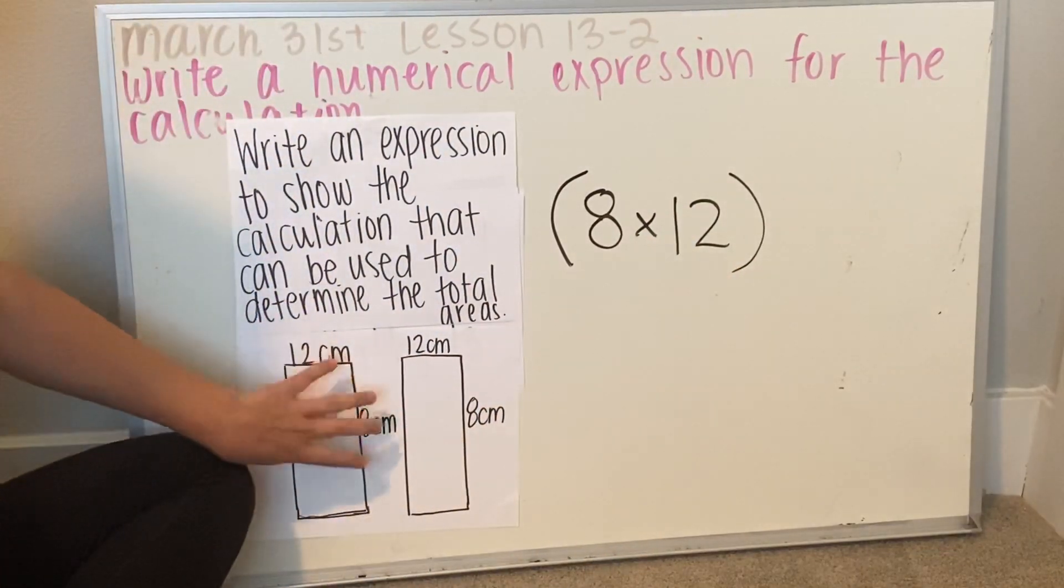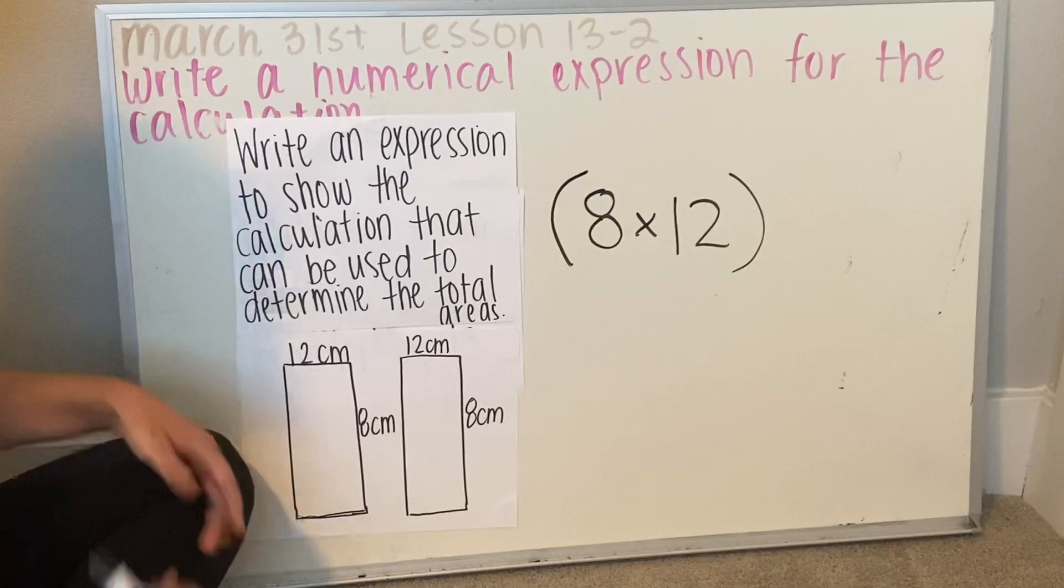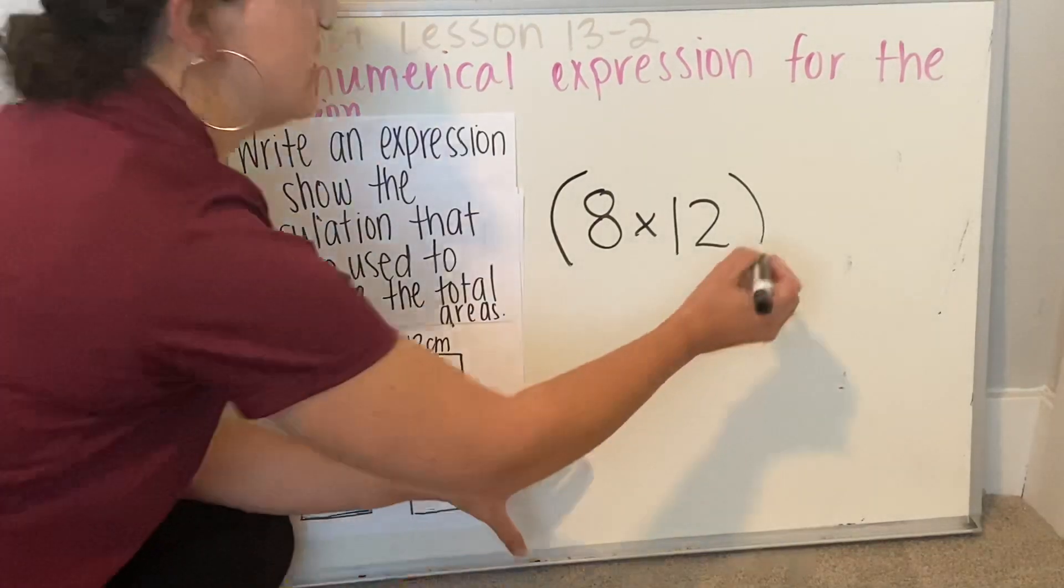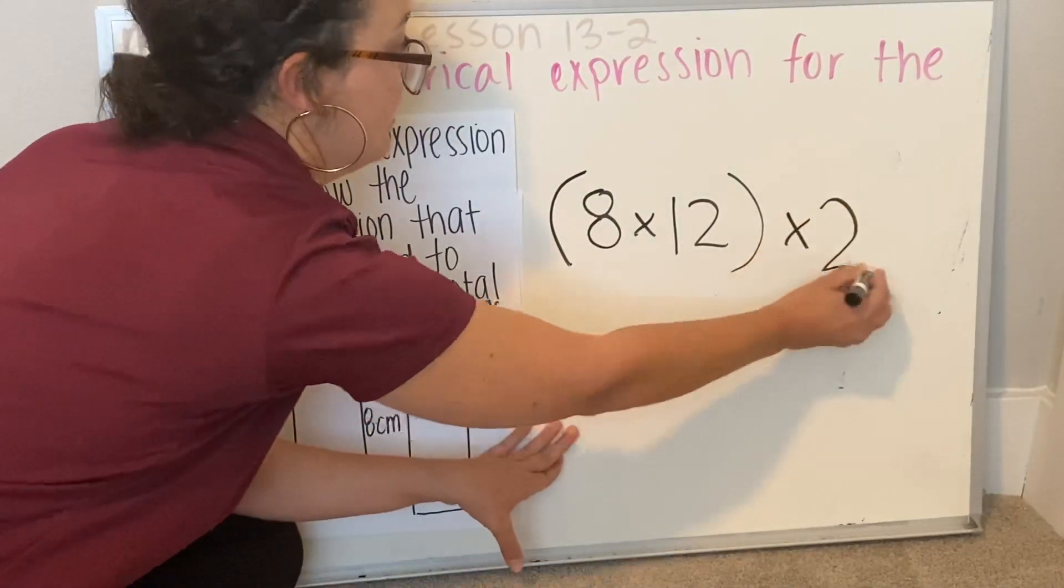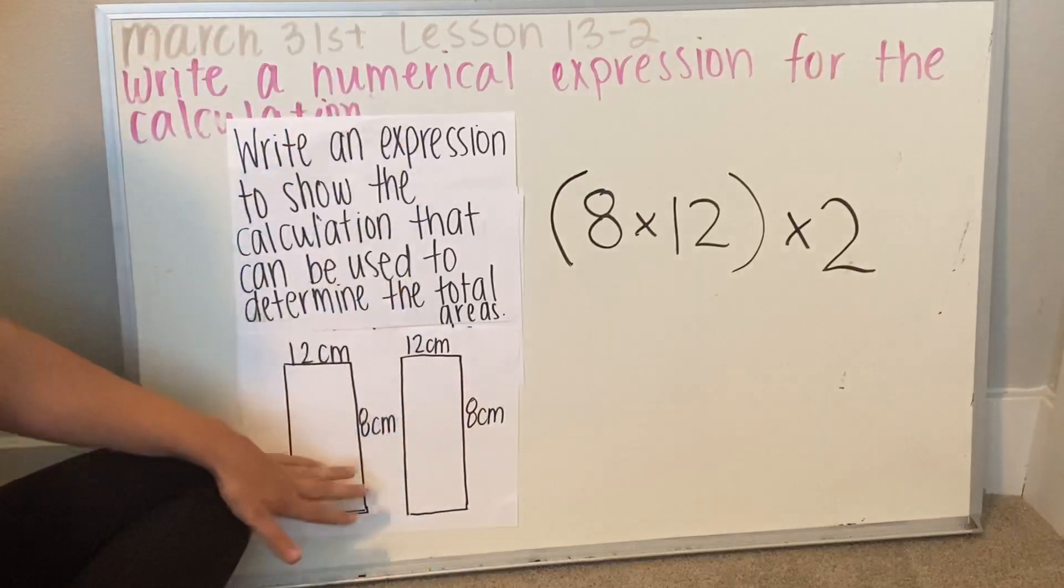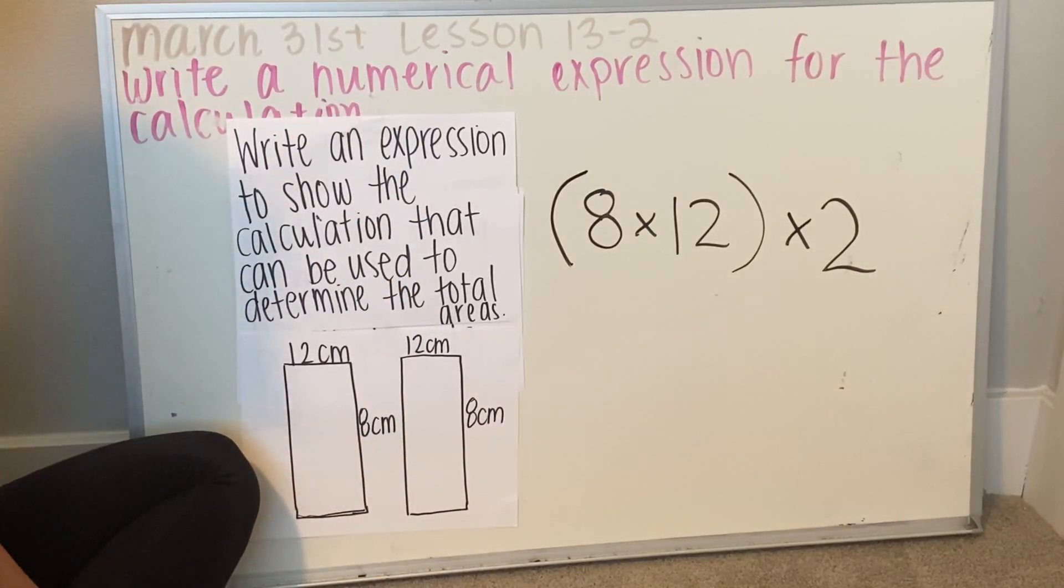You need to multiply the length times width by one of them. But there are two of them, so we need to multiply by two. So there's going to be a very similar problem like this as well.